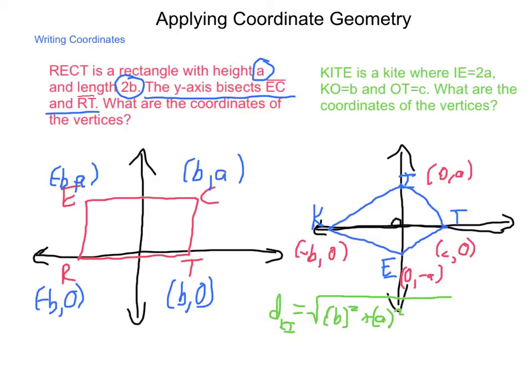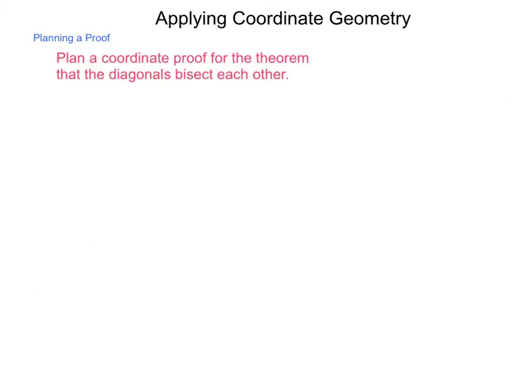Now, the reason we're doing all this is our next lesson is going to be writing a proof using coordinate geometry. So let's see how we can at least start to think in terms of getting a proof. If we needed to plan a coordinate proof for the theorem that the diagonals bisect each other, specifically the diagonals of a rectangle bisect each other, how would we go about this? First, we'd have to establish the locations, establish coordinates. This will be done either in terms of actual numbers or the variables themselves.